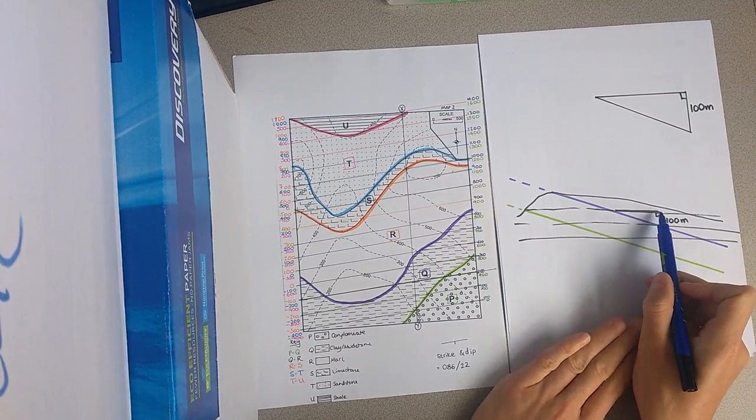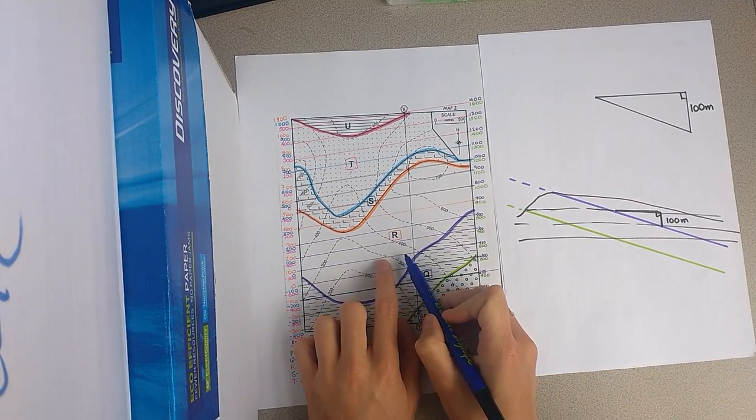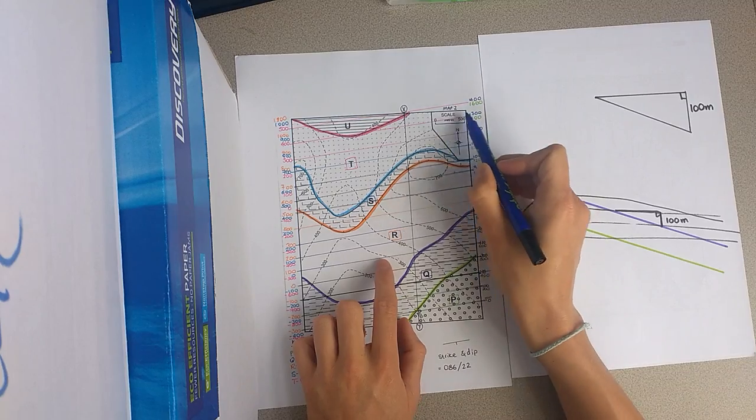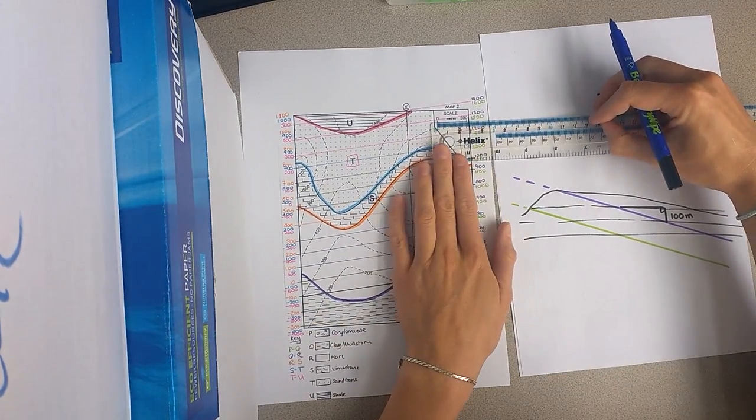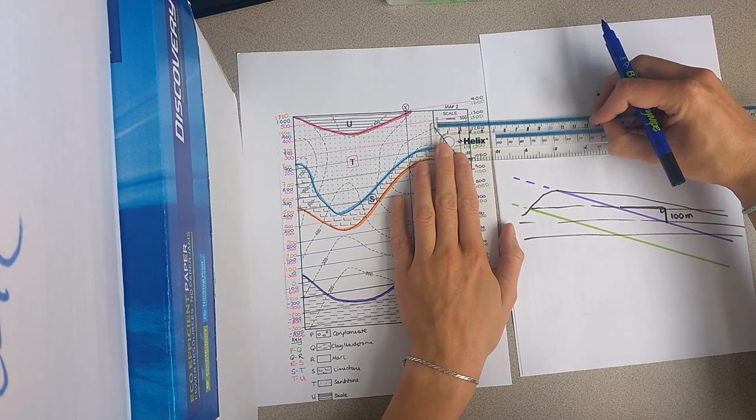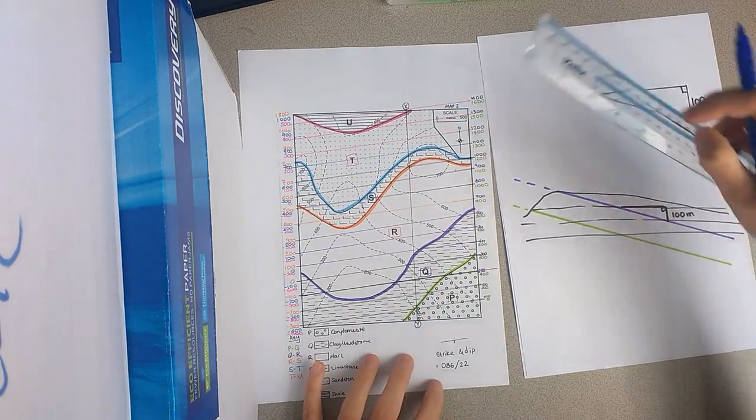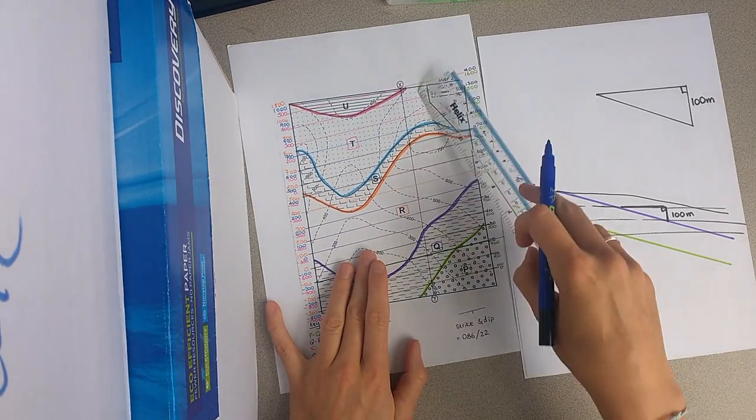Now, the horizontal distance is the distance between the structure contours. But this is a factor of the scale of the map. So you can see the scale of the map is 2.5 centimetres is 500 metres. So as I'm looking at this purple surface, well, actually, it doesn't matter because all of these are uniformly dipping.